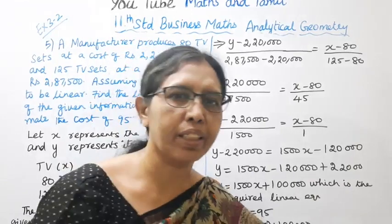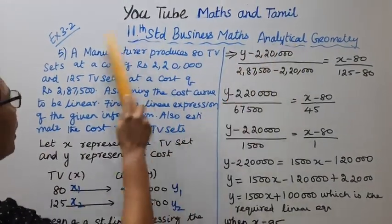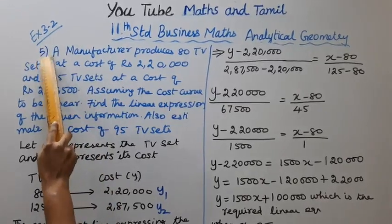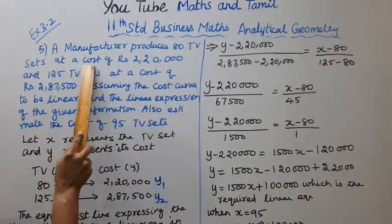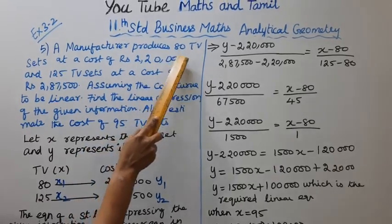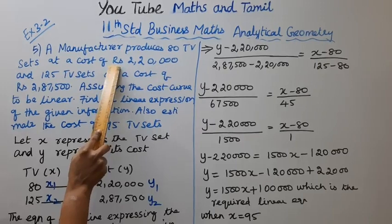Hello students, welcome to Maths and Tamil channel. Eleventh standard Business Maths, Analytical Geometry, Exercise 3.2.57. A manufacturer produces 80 TV sets at a cost of rupees 2 lakh 20,000, and 125 TV sets at a cost of 2 lakhs 87,500.